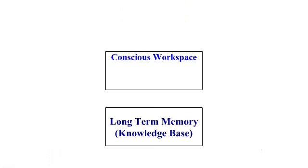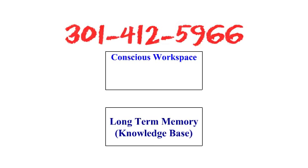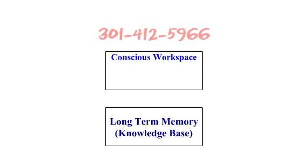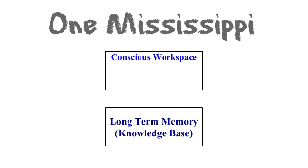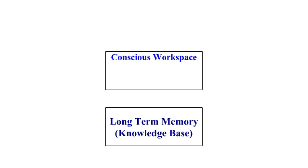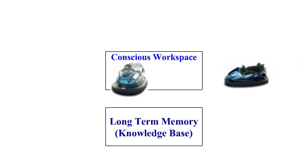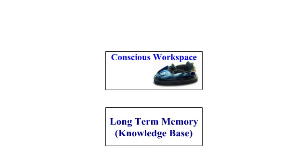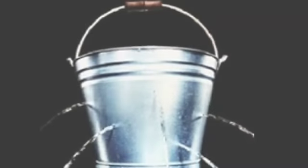An important difference between the conscious workspace and long-term memory is that the capacity of the conscious workspace is severely limited. When you look up a phone number and keep it in mind until you dial it, you are using the conscious workspace. But the conscious workspace has a time span of less than two seconds before it needs to be refreshed as new bits of information or thoughts displace older items. Think of it as a leaky bucket.